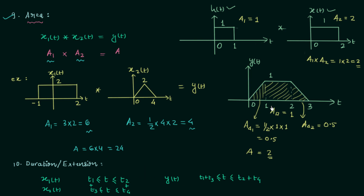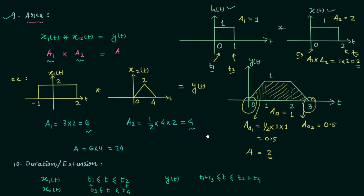We will verify this property using our previous result. The non-zero value range of signal h(t) is from 0 to 1, so t1=0 and t2=1. Signal x(t) is non-zero between 0 and 2, so t3=0 and t4=2. According to the duration property, the result after convolution should be non-zero between t1+t3 = 0+0 = 0 and t2+t4 = 1+2 = 3. The output y(t) is indeed non-zero from 0 to 3, satisfying the property of duration or extension. Try to practice more problems, and if you face any difficulty, ask in the comment section.